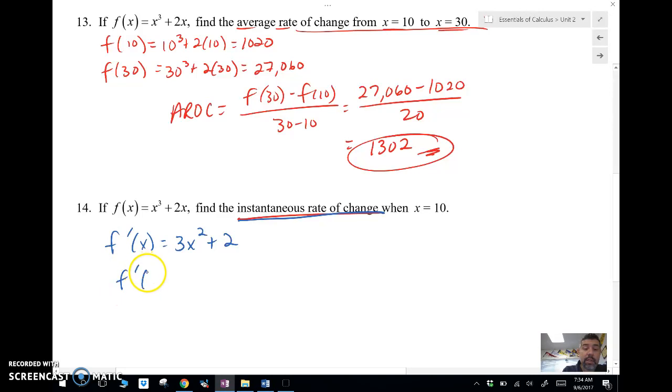Now we're going to plug in 10. Again, notice here that the instantaneous rate of change only has one x value that we're dealing with. That's another clue as to you're doing a derivative. It's the only one thing I need to put in there.